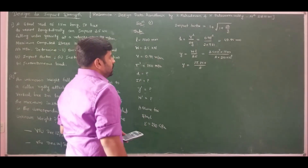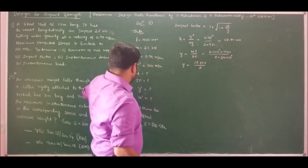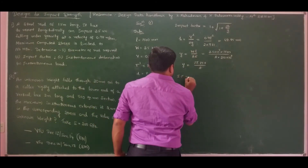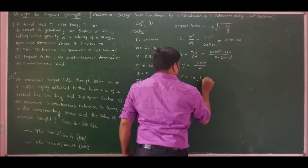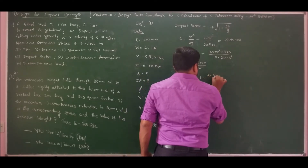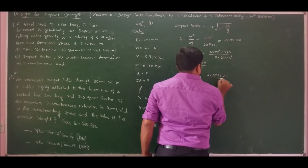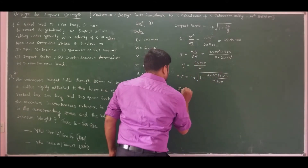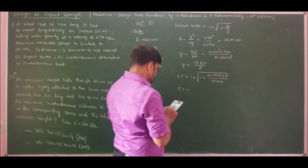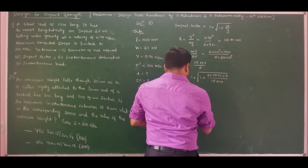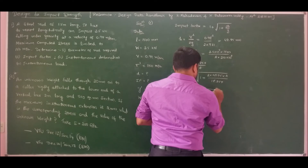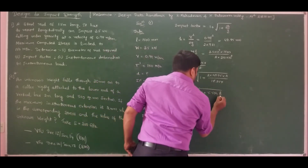Area should be substituted in mm squared because L is in mm and Young's modulus is in N per mm squared. Therefore, the impact factor is 1 plus the square root of 1 plus 2 times 49.95 times area divided by 17.857, which simplifies to 1 plus the square root of 1 plus 5.594 times area.